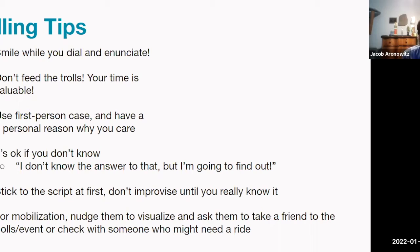If you don't know the answer to a question they're asking, it's okay to say that. If the script doesn't have it, say 'I don't know the answer, I'm going to find out and ask the volunteer coordinator or field director.' You don't want to say something you don't know is true, and people respect honesty. Stick to the script at first and don't improvise until you know it. Do a few calls by the script first, get your sea legs, and then you can start to improvise and tell stories about yourself and how you connect to the issues at stake.